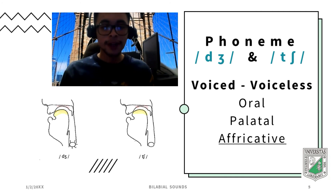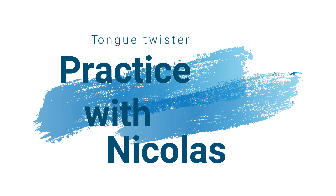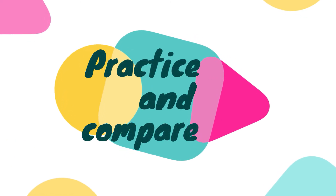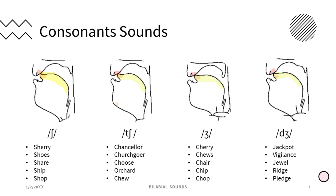The T with the S sounds like 'ch.' Practice words include: fish shop, chancellor, churchgoer, orchard, cherry, chair, chip, chop, jackpot, vigilance, jewel, ridge, pledge.